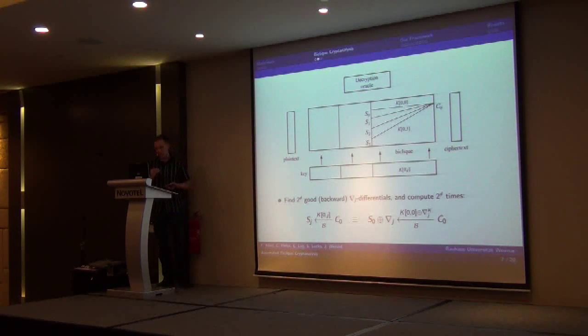Similarly, one has to find 2 to the d good backward differentials and compute 2 to the d times in backward direction. Now, since these are different key differences, one should expect to land or arrive at different starting states.